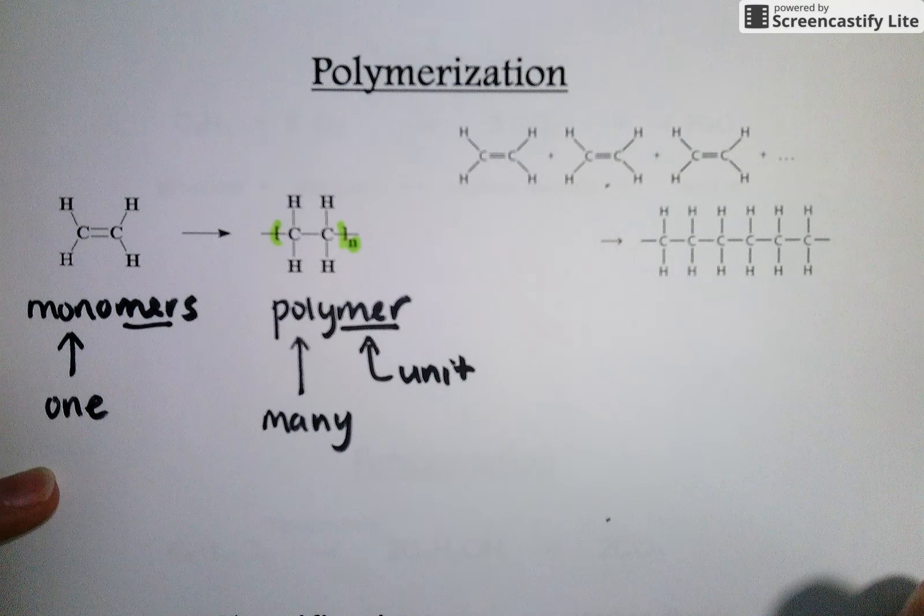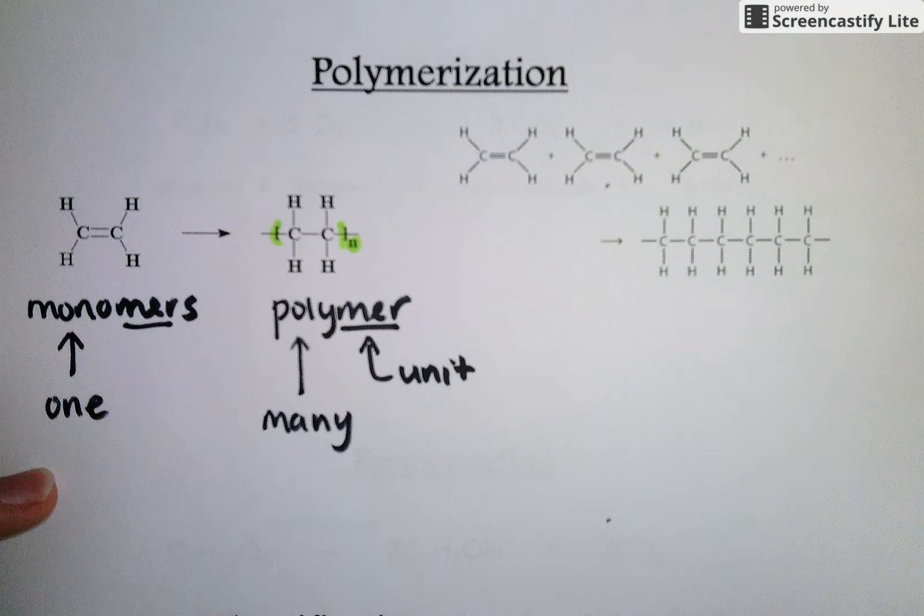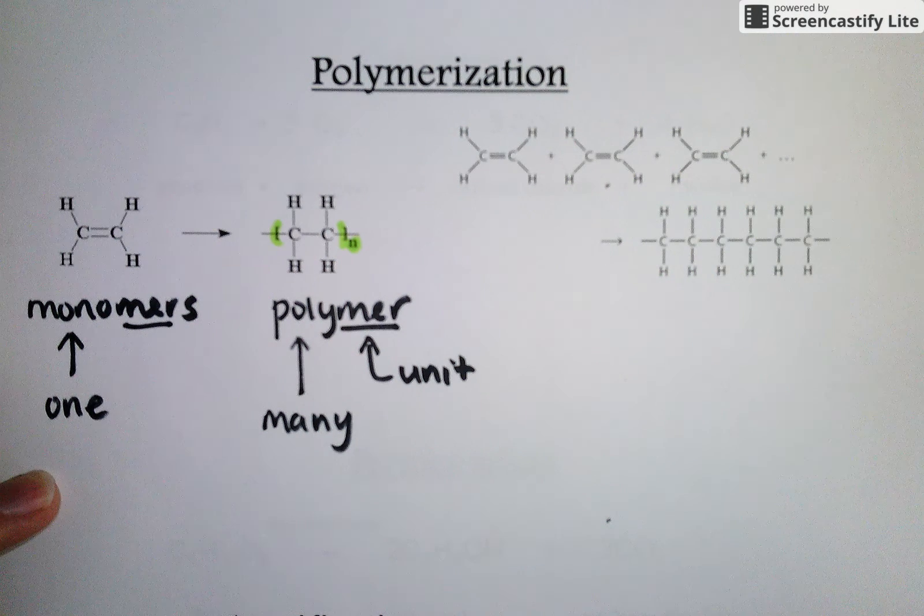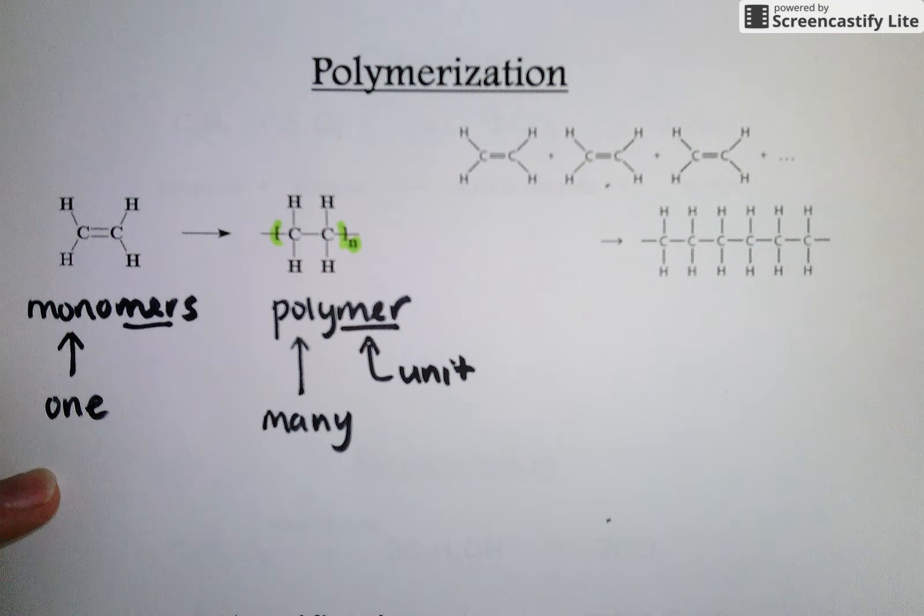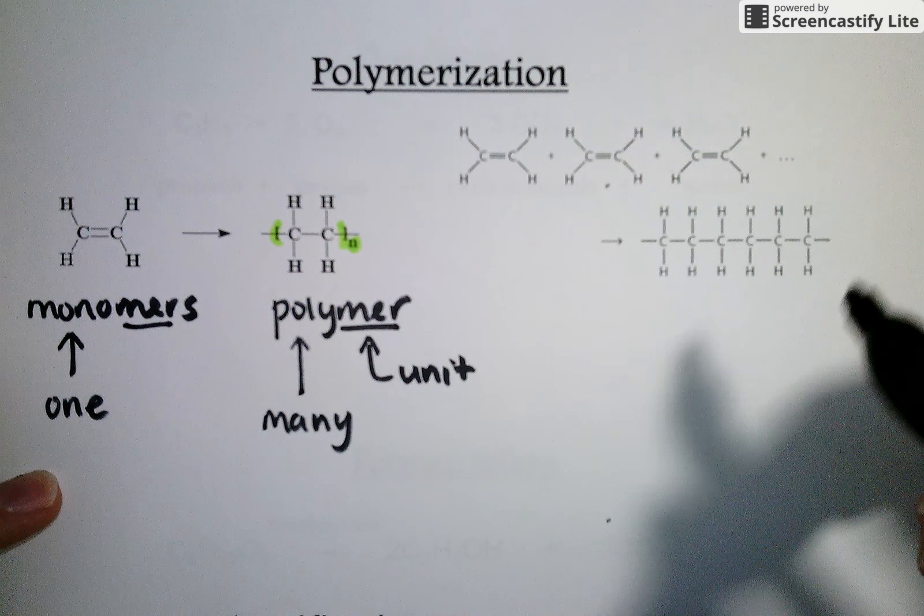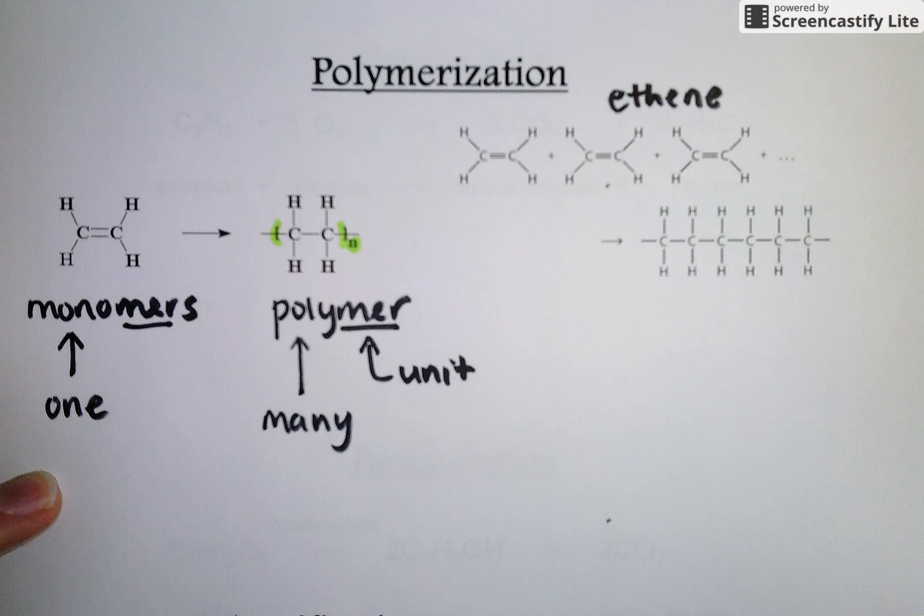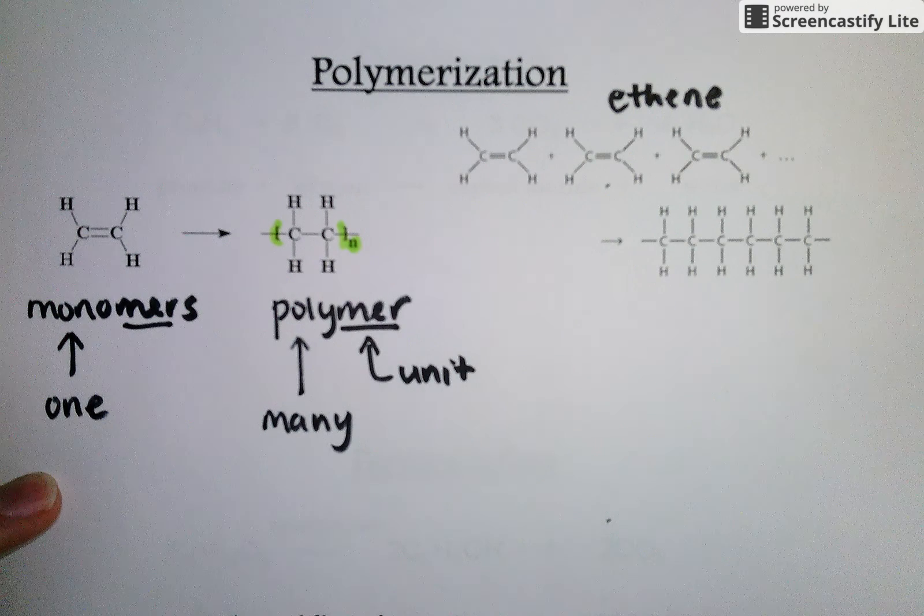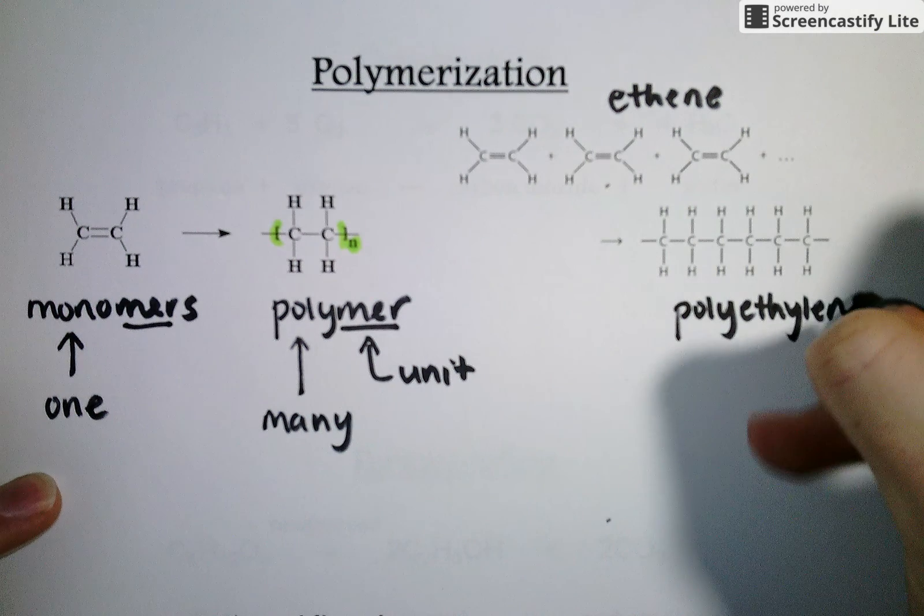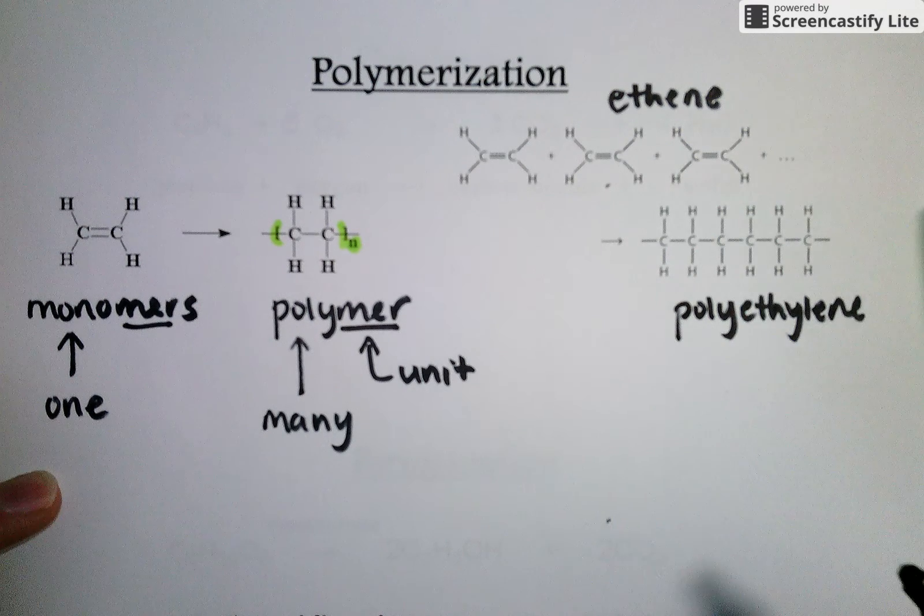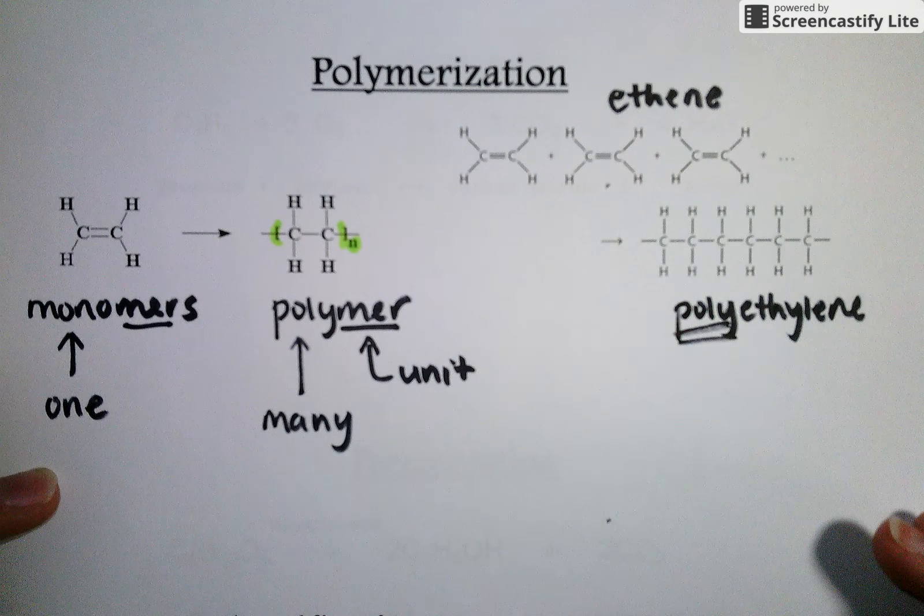So to polymerize something means to take a simple unit and link it together over and over and over again until you get this really big, long molecule. And this is important because if you have anything at all made of plastic, this is how we make plastics. We stick simple molecules together to create these big, long chains. And we can link those chains together in lots of different ways. So in this example, what we're actually doing is taking ethene, which prior to IUPAC sort of standardizing how we named organic molecules was called ethylene. And we link it together to get polyethylene. So we go from a simple unit to many units linked together.